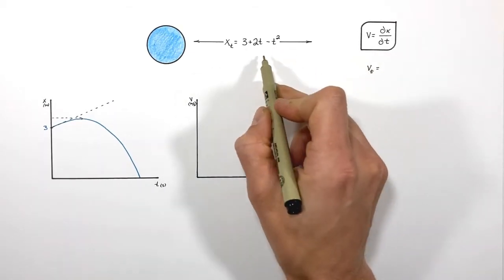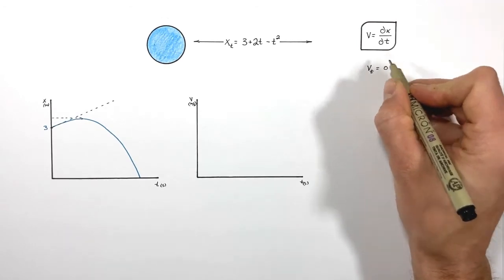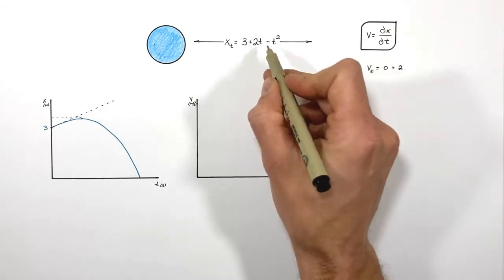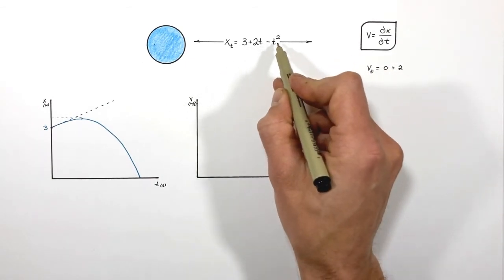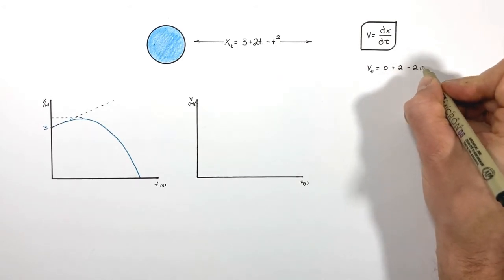Taking the derivative of this function, we can just apply the power rule. So the derivative of 3 is 0, plus the derivative of 2t with respect to t, that's 2, and then lastly we have this negative t squared. We're taking the derivative of that, so that's going to leave us with negative 2t.